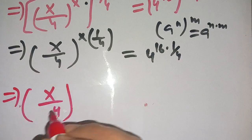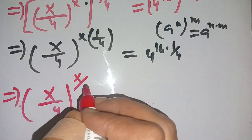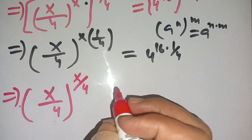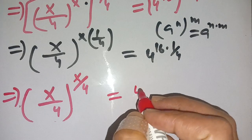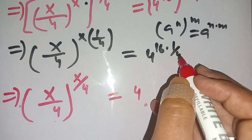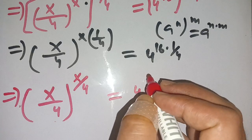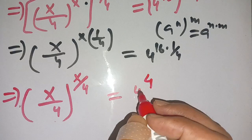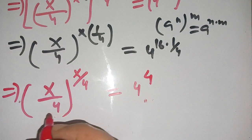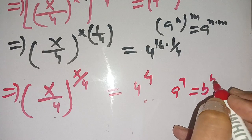On the left-hand side we get (x/4)^(x times 1/4), which simplifies to (x/4)^(x/4). On the right-hand side, 16 times 1/4 = 4, so we get 4^4. Thus (x/4)^(x/4) = 4^4.